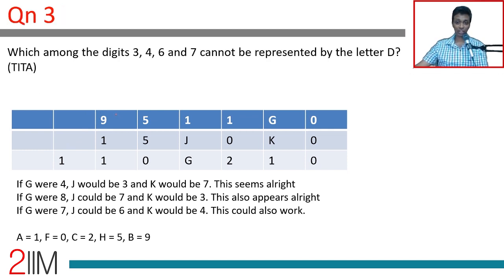3, 4, 6, 7 cannot be represented by the letter D. And so remember we've got A is 1. F is 0. B is 9. C is 2. And so we've got these 4. 1, 0, 9, 2. And we've got H is 5.